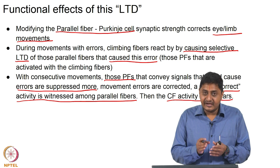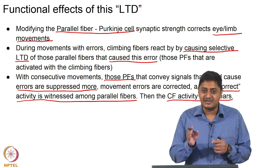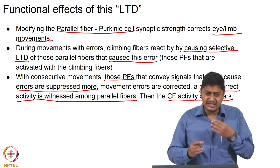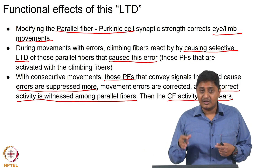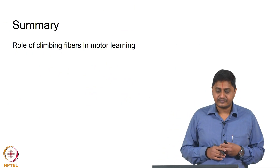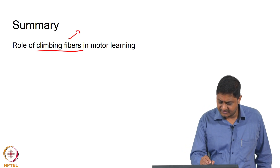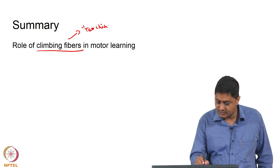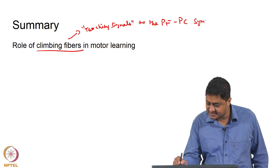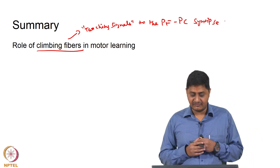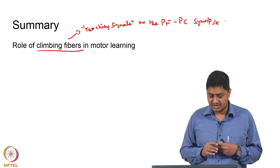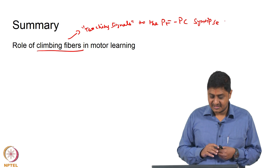Climbing fiber activity, when it accompanies parallel fiber activity, signals that the parallel fiber is causing an error and its effect must be reduced in future — done selectively through multiple iterations. Later, the climbing fiber activity disappears, but those parallel fibers are not responded to in future trials. In summary, the crucial role of climbing fibers is that they act as teaching signals to the parallel fiber–Purkinje cell synapse, selectively modifying synaptic strength and thus contributing to motor learning. This is the dominant hypothesis in motor learning, and we will continue our discussion in the next class.